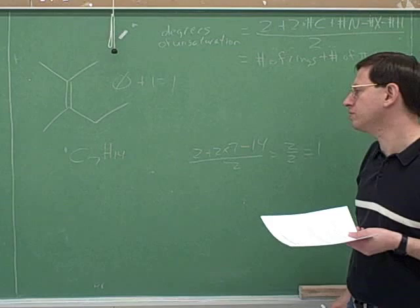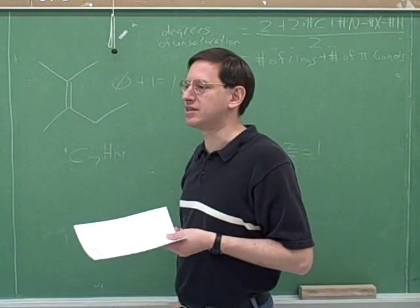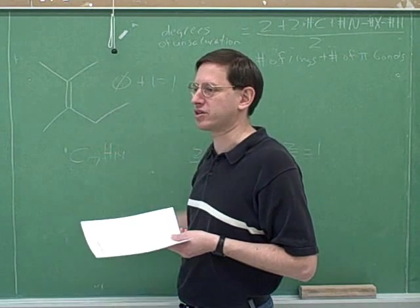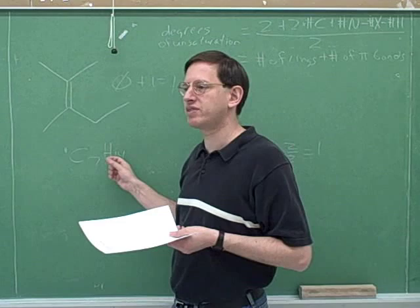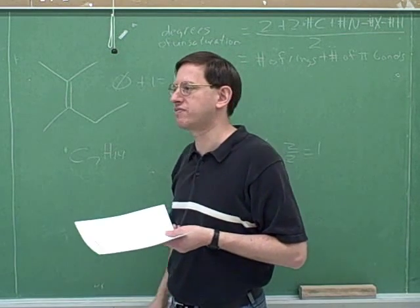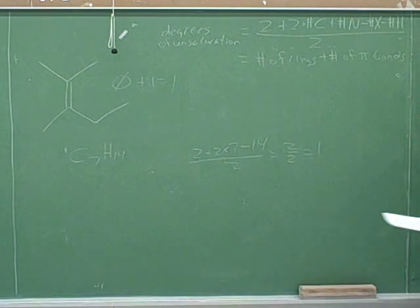So that confirms that the formula would give us the right answer. Usually in real life, when you use the degrees of unsaturation, you use it because you don't know the structure. This is just for practice to confirm the structure. But normally we would just be given C7H14. If we're given C7H14, we know there's either one pi bond or one ring. And that's very useful if we're trying to be detectives and puzzle out the structure. So this confirms that the degrees of unsaturation formula works for part A of number 41.